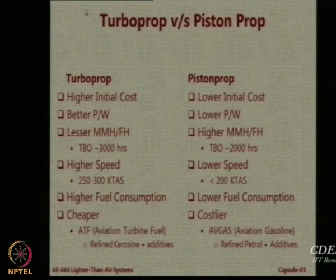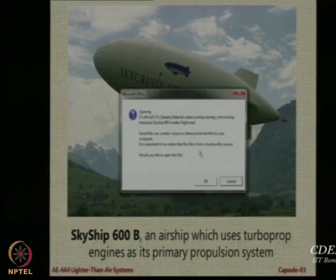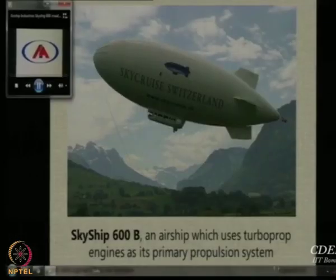The cost of petrol today is around 64–65 rupees, ATF approximately 100 rupees, while kerosene is only 25–30 rupees — so ATF is relatively cheaper than avgas. The first airship to use turboprop as its principal powering system was the Skyship 600. Let us have a look at a short film about this airship — the launch video of the Skyship 600.